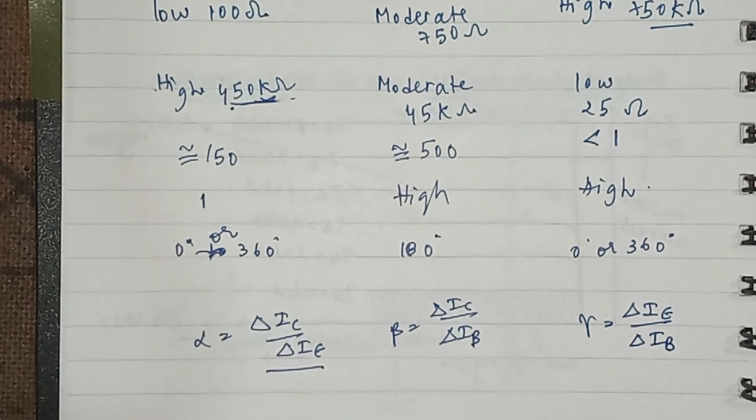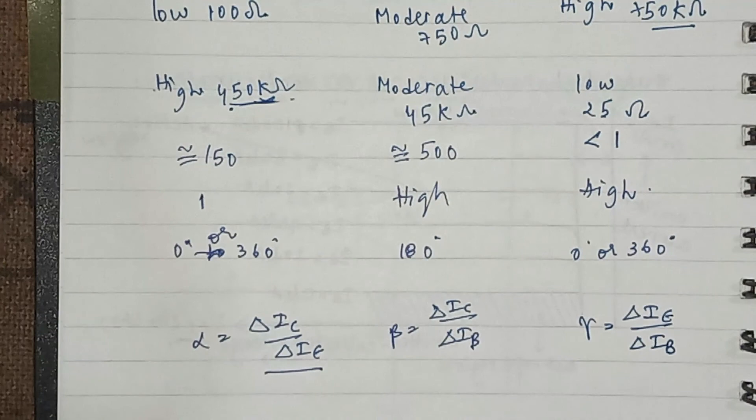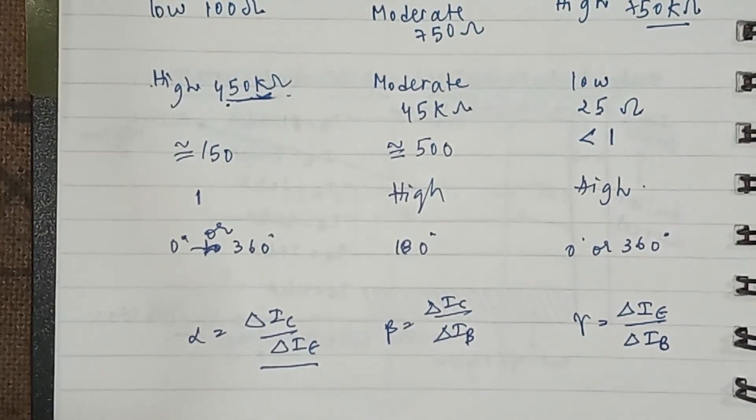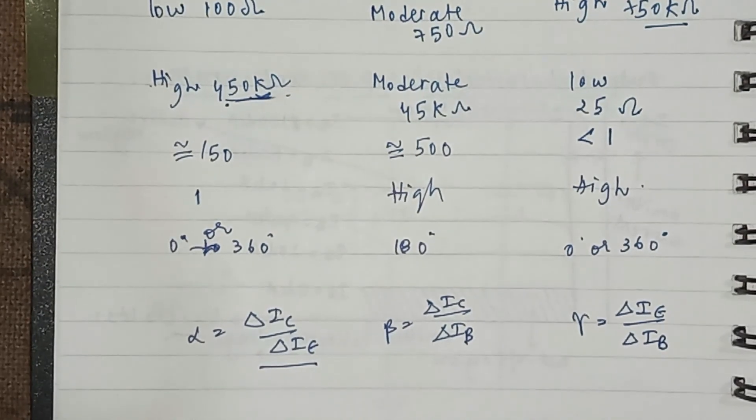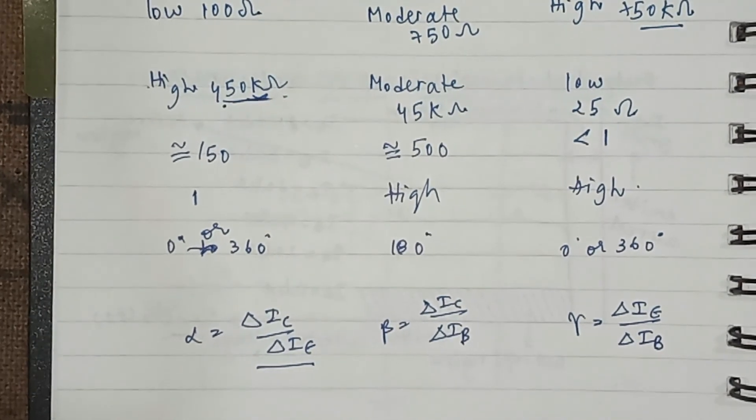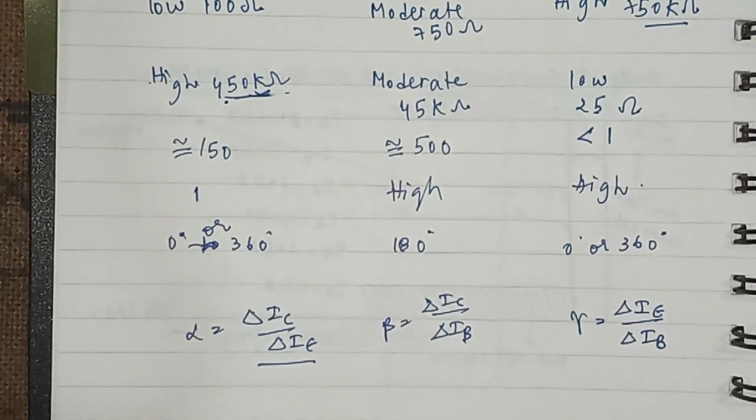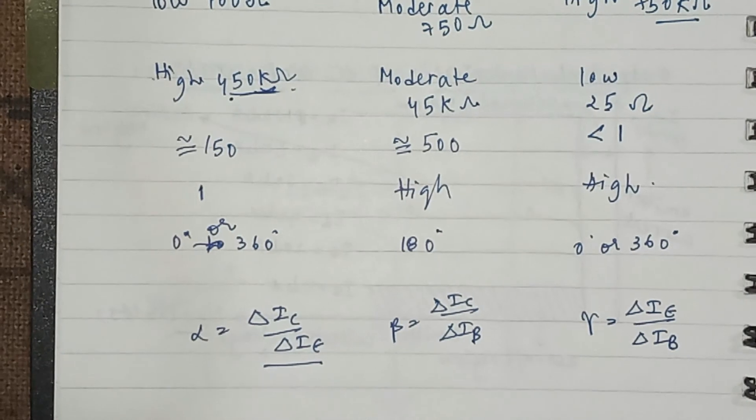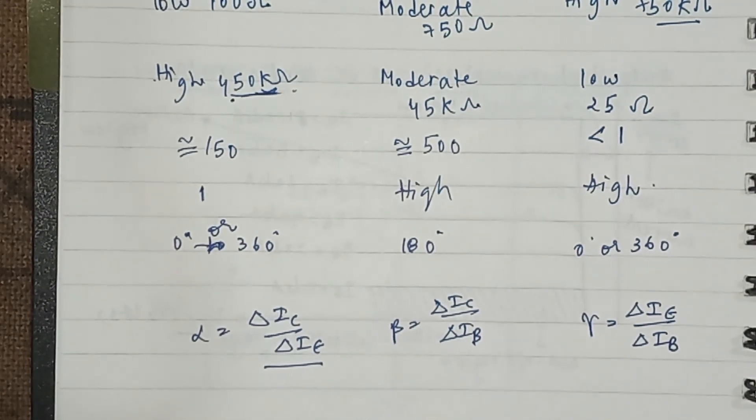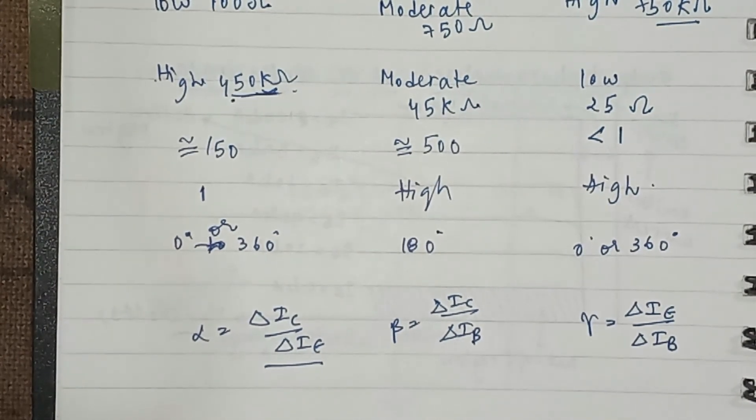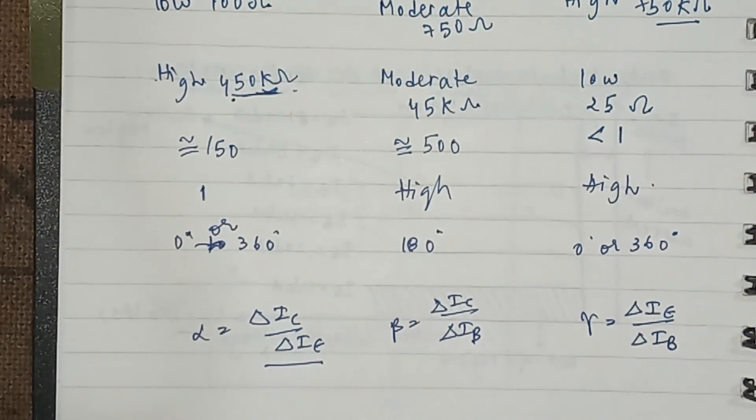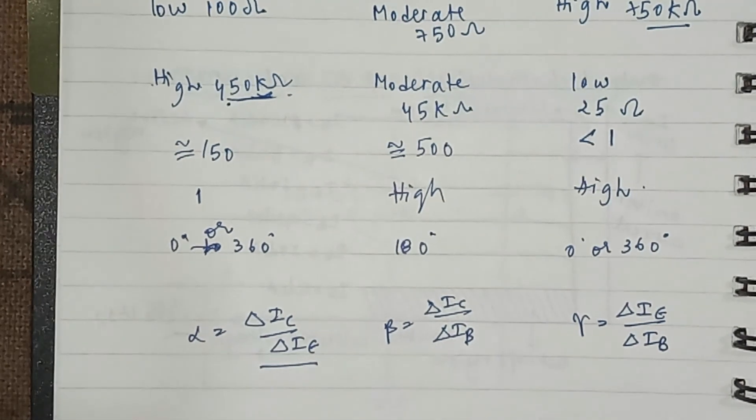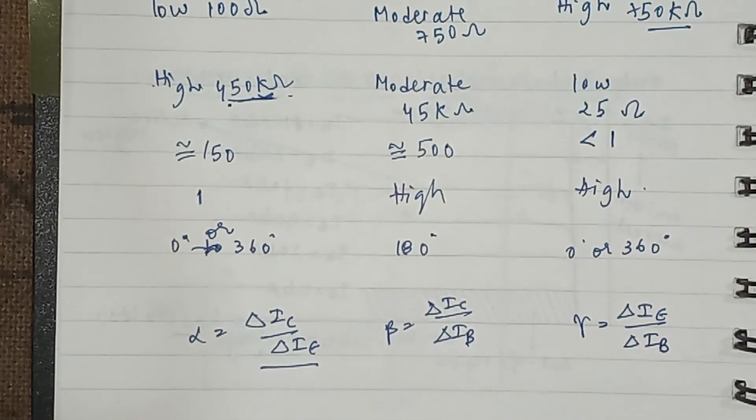Coming finally to the applications of these three configurations, we have CB used for high frequency circuits, CE used for impedance circuits, and CC finally used for impedance matching. That's all we have to talk about the comparison of these three configurations of transistors in brief. Thanks for watching!